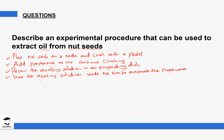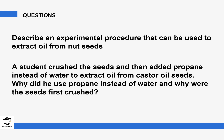The next question: a student crushed seeds and added propanol instead of water to extract oil. Why did they use propanol instead of water? Propanol is used because it dissolves the oil — it is soluble with oil. Water was not used because water is insoluble in oil. Why were the seeds first crushed? The seeds were crushed to increase the surface area, allowing the solvent to come into contact with the oil.